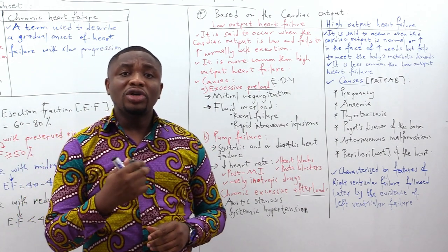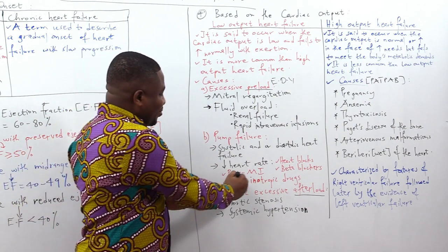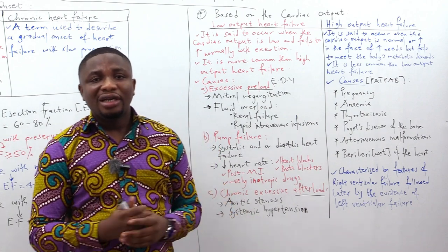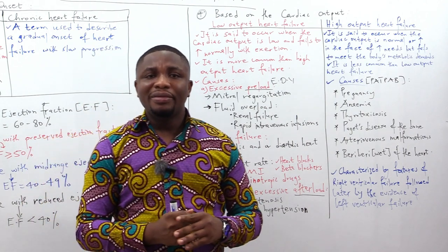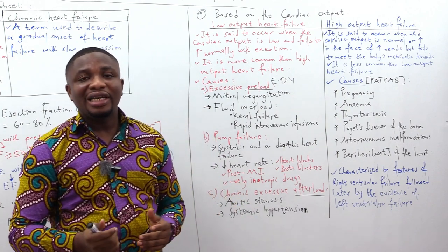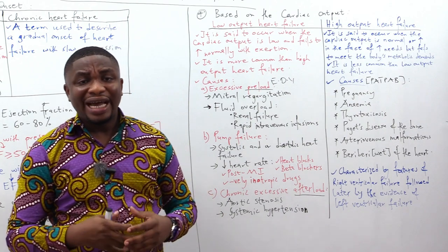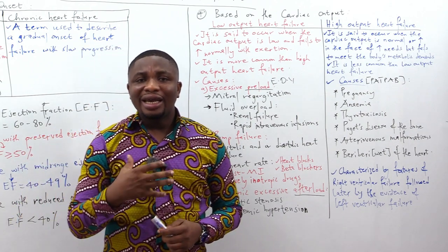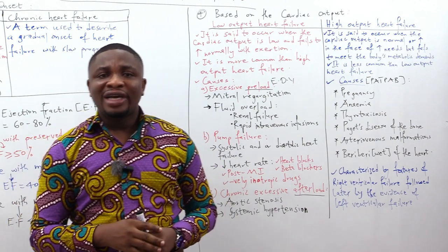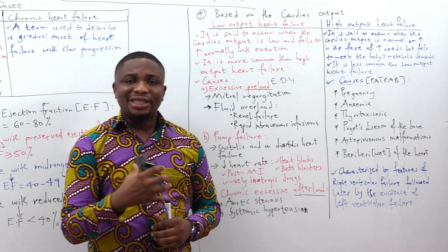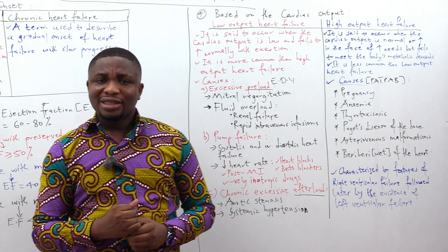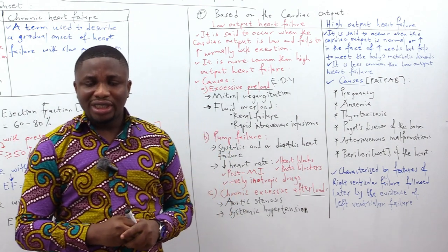Post-myocardial infarction also contributes to pump failure: when cardiomyocytes are necrotic and dead, the function of contraction becomes impaired. Finally, negatively inotropic drugs — agents that decrease the force of contraction or contractility of the heart — can also give rise to a low heart rate and pump failure.